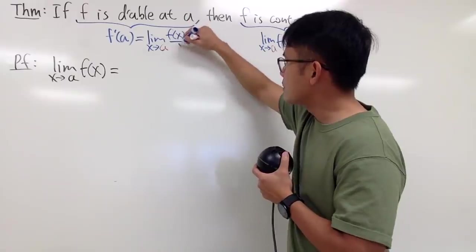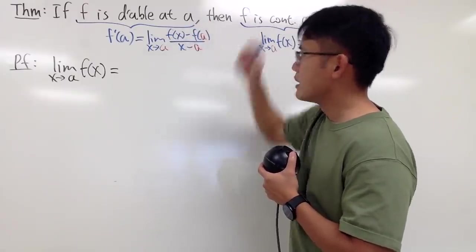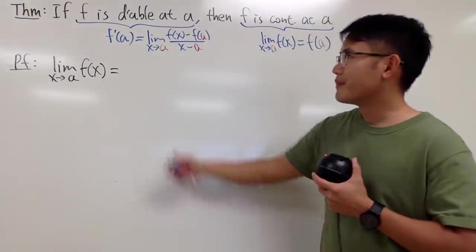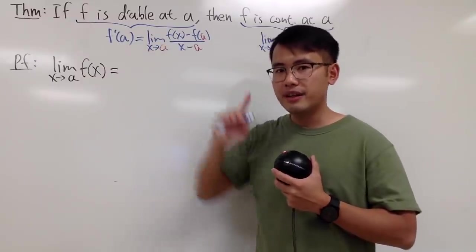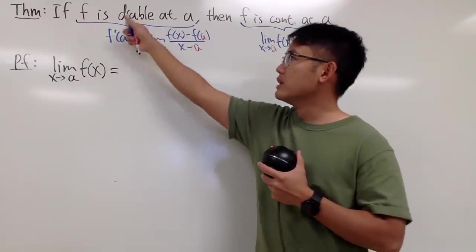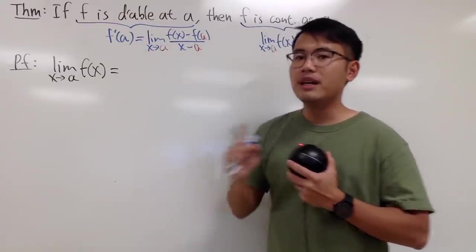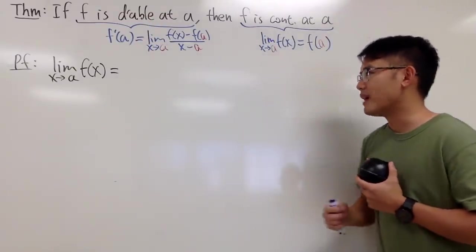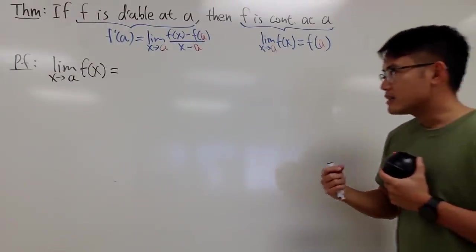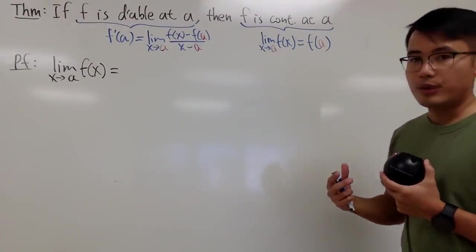So this is f of x minus f of a, and then bottom, we have x minus a. So we know that this right here exists, because we are given that we have f being differentiable. In another word, this right here has to be a nice number. It cannot be undefined whatsoever.